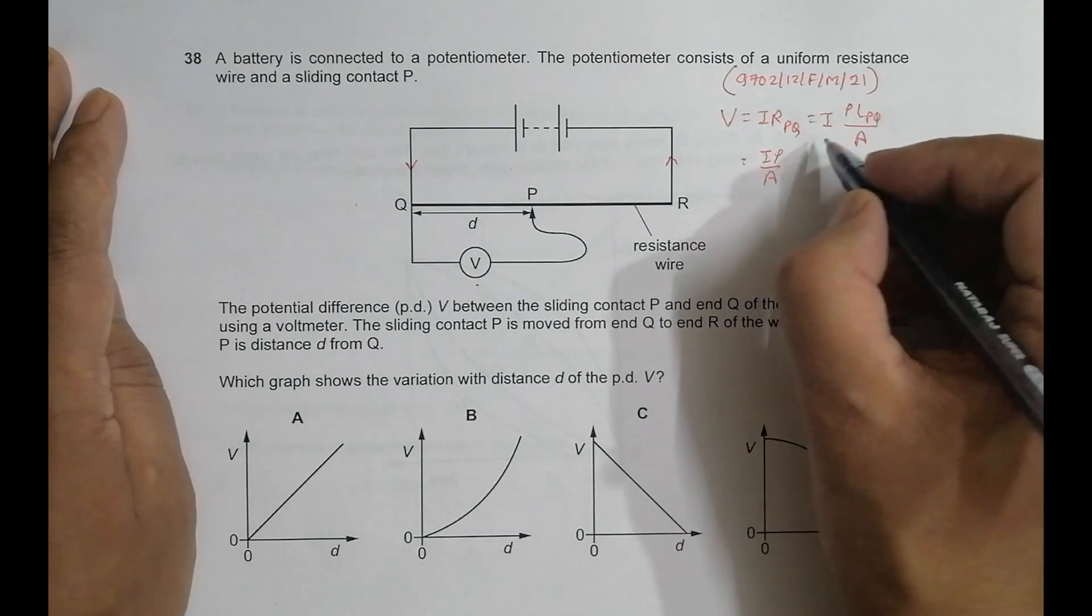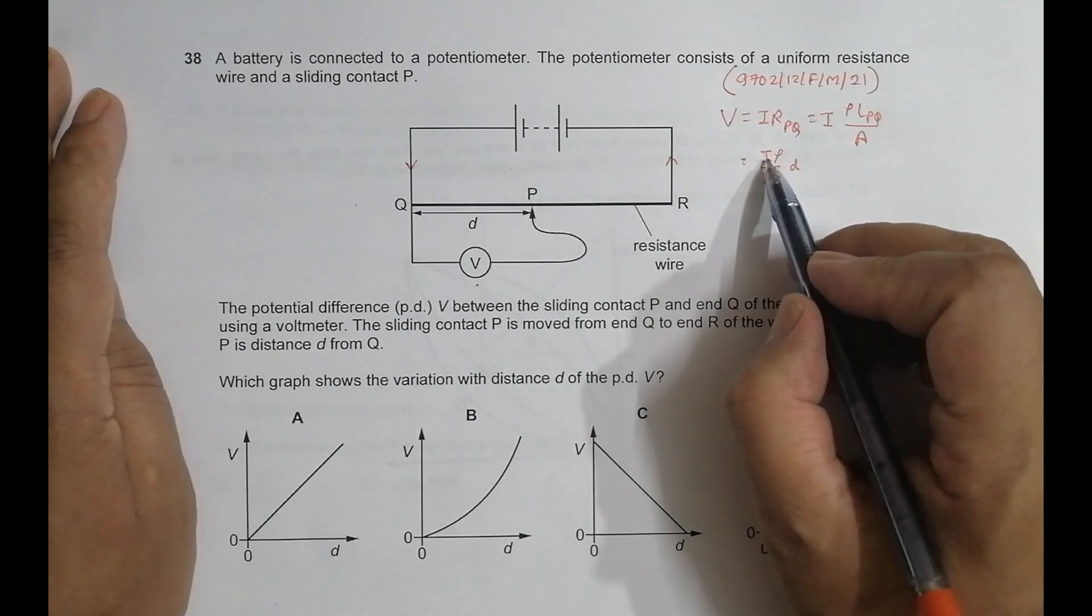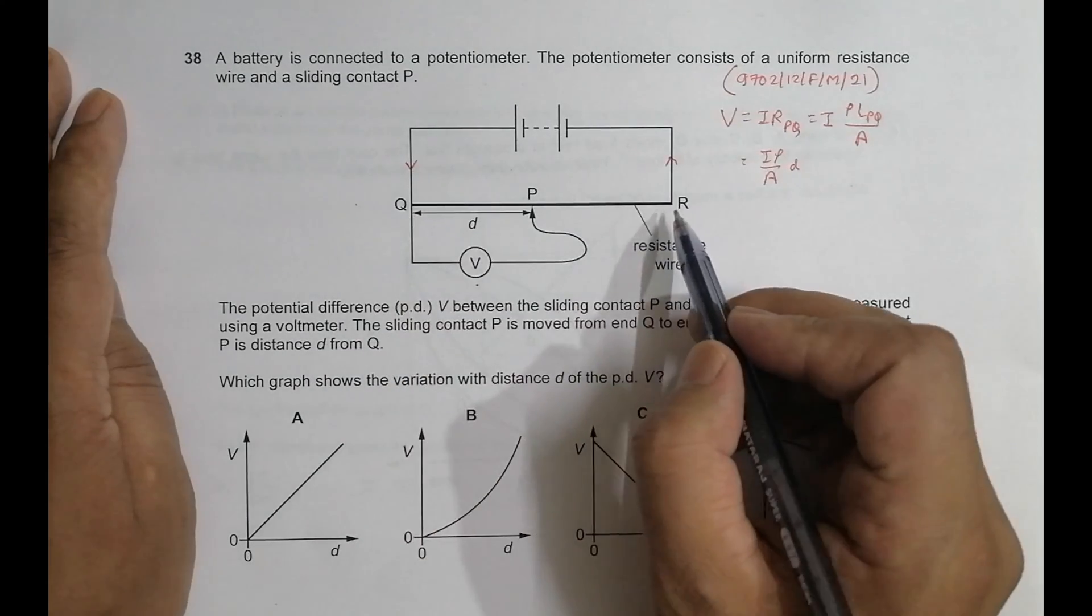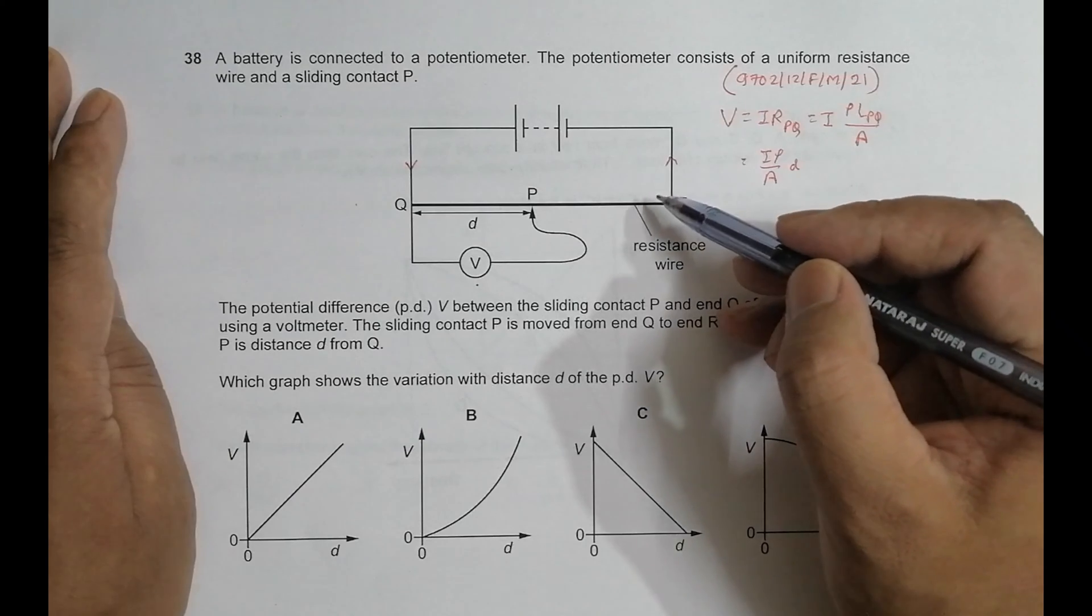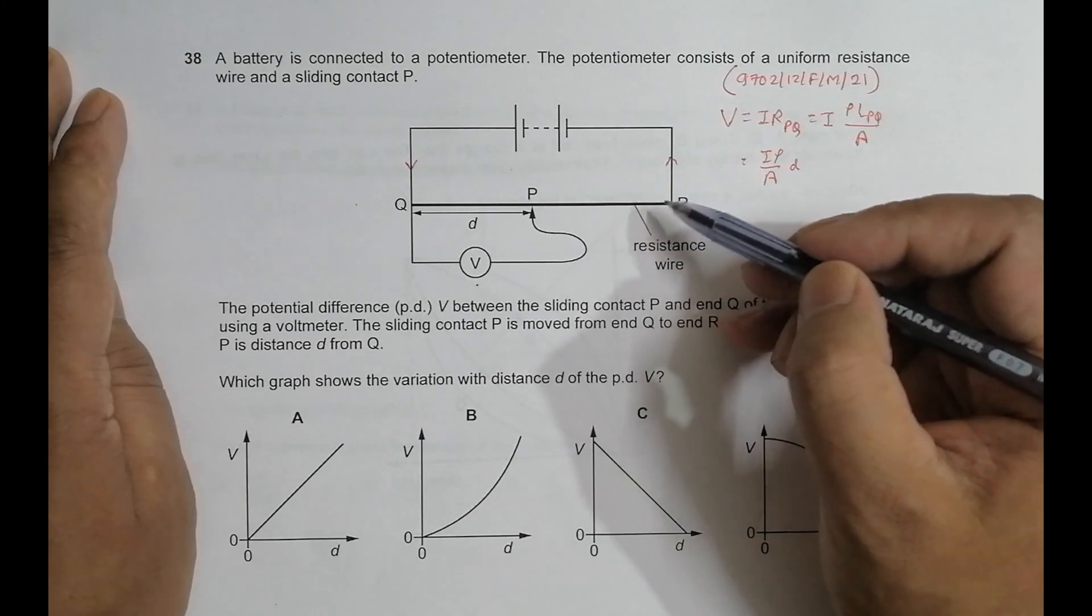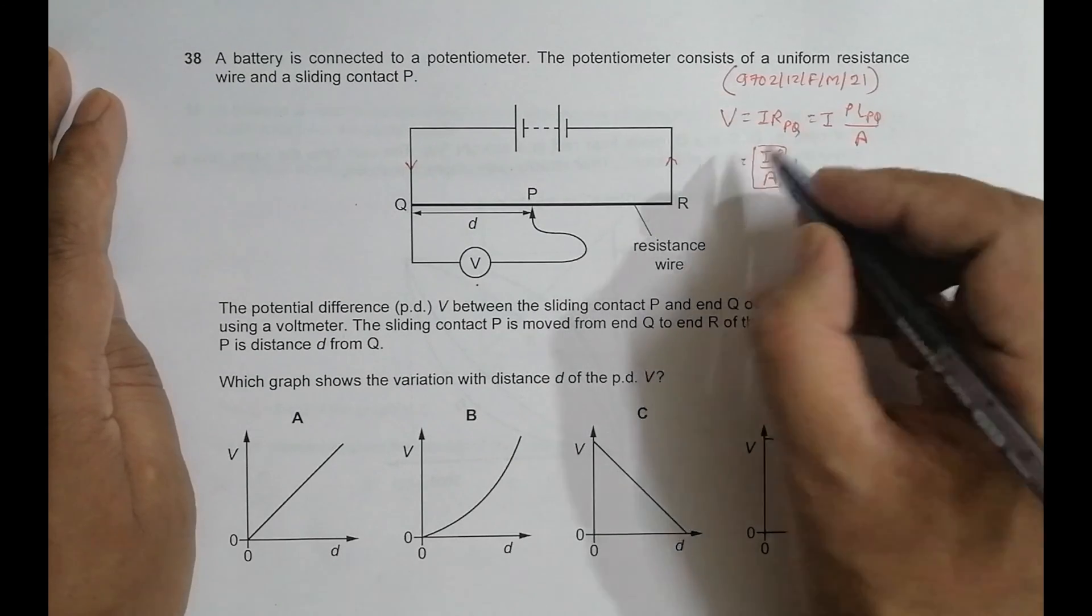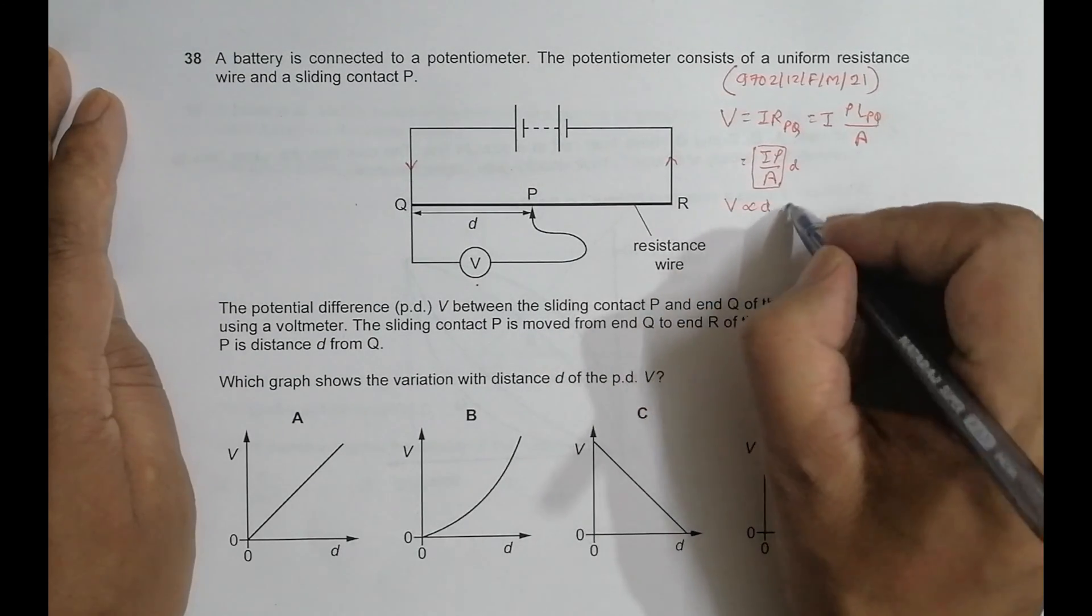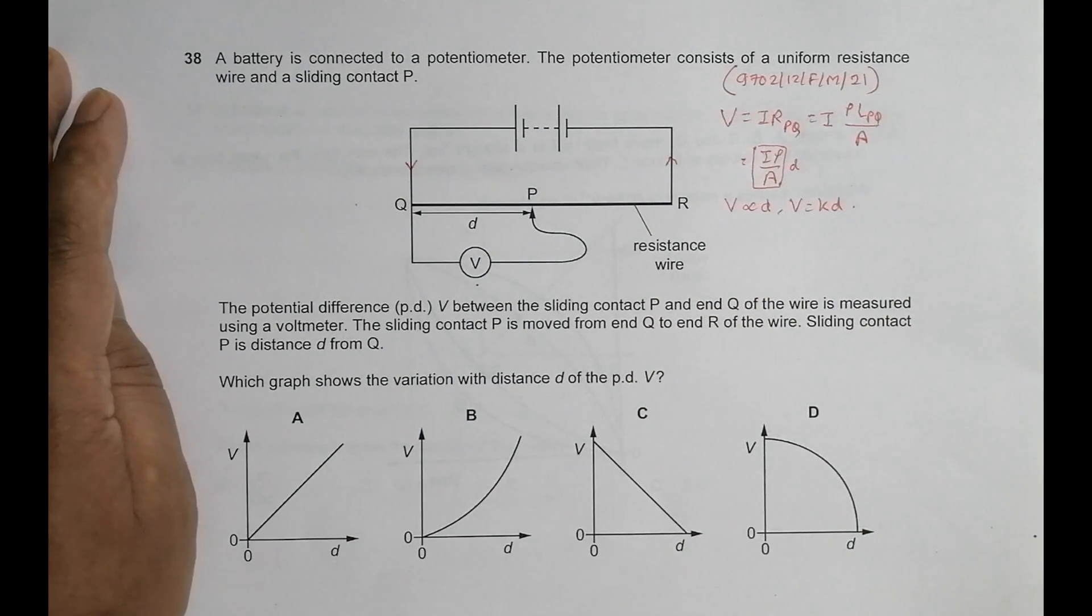So I denote this L_PQ by this D. So I is constant, it is made constant. ρ is the resistivity of the wire, so it should be constant at constant temperature. And A is the cross-section, so a potentiometer uses wire of uniform cross-section, so that's why this whole thing is also constant. So that gives us V is directly proportional to D, or I can say V equals some constant times D. So the graph of V and D should be choice number A.